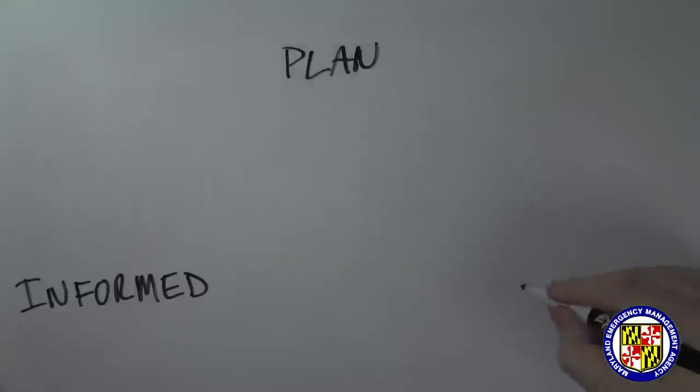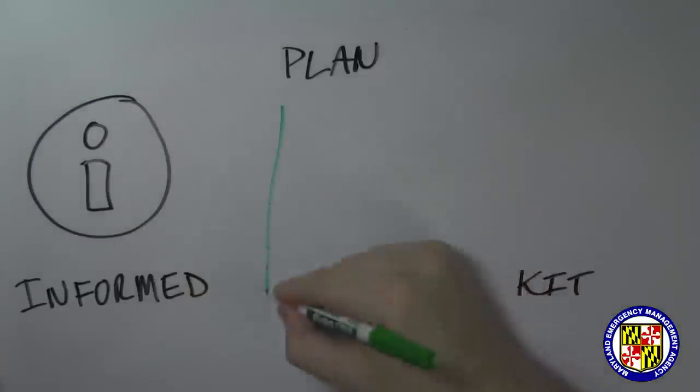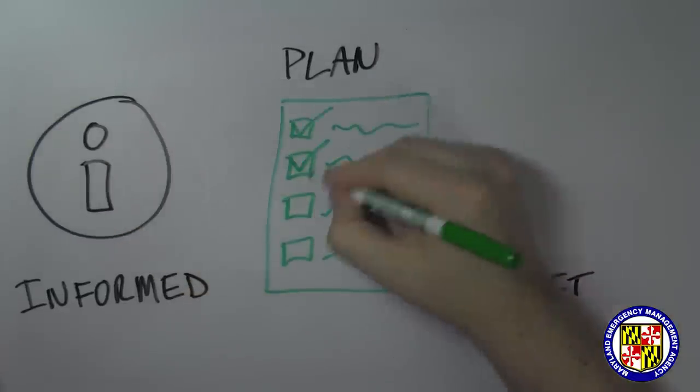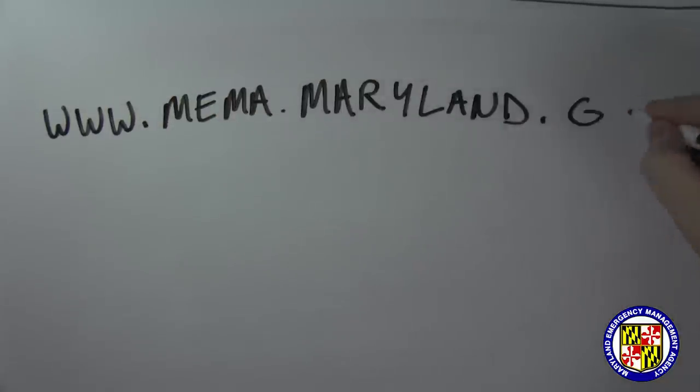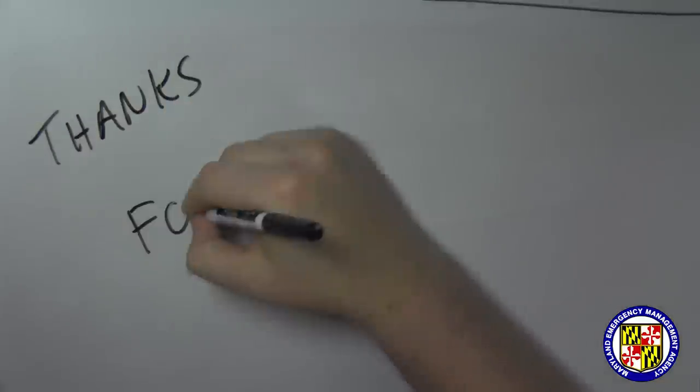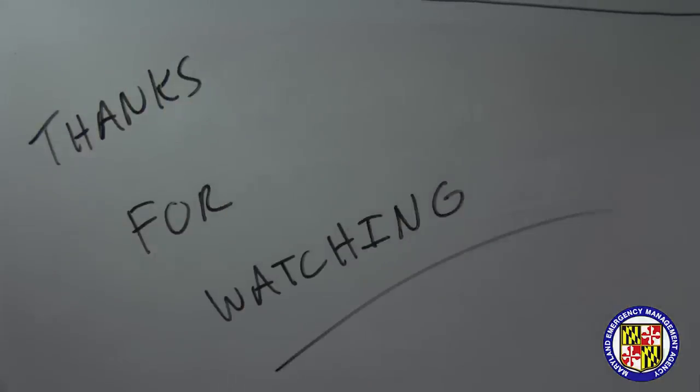Be informed, make a plan, build a kit. Information on what to pack in your kit and how to make a communication plan can all be found at www.mema.maryland.gov.